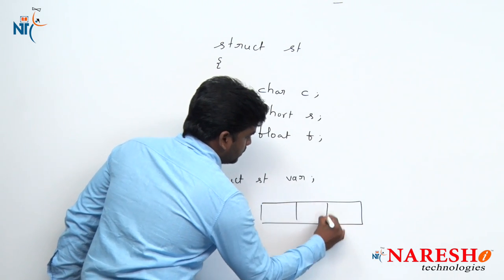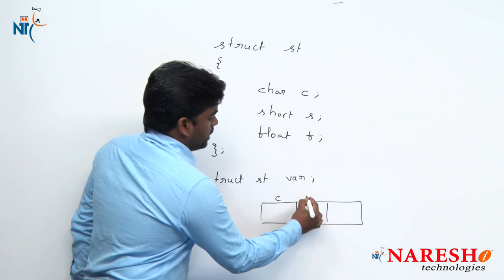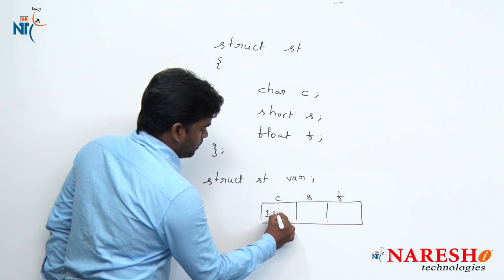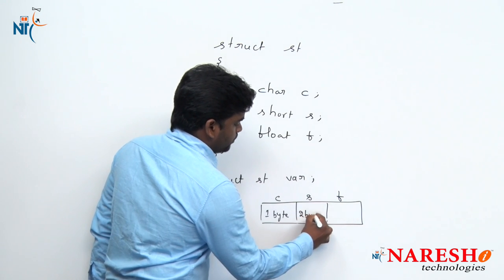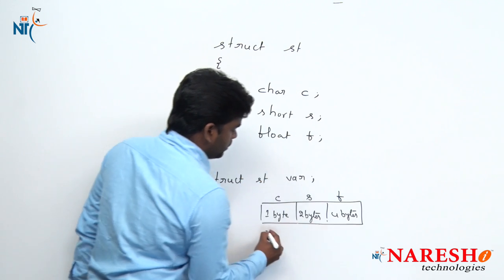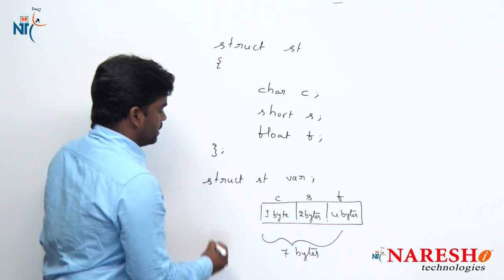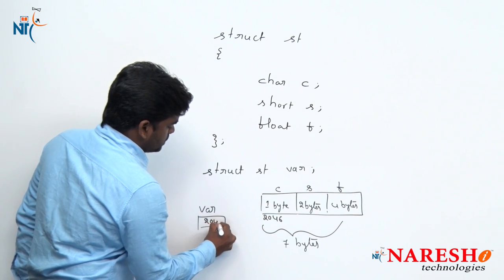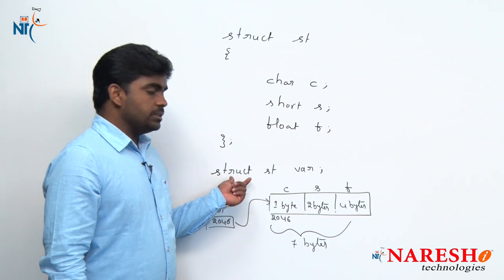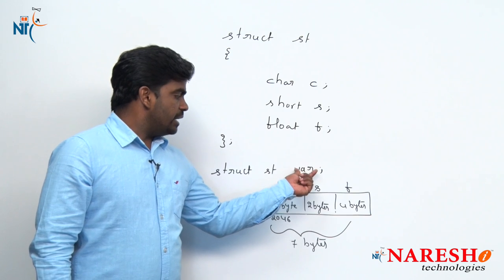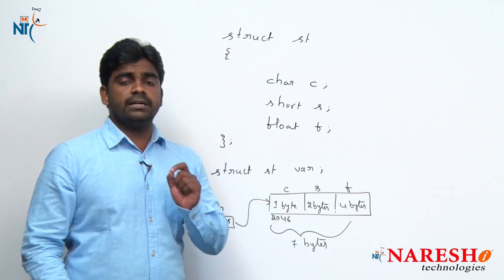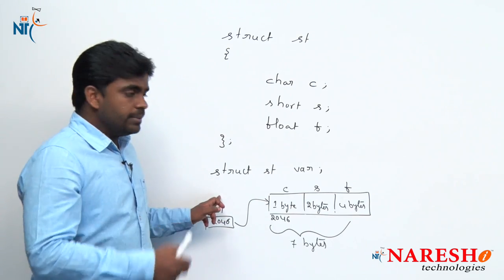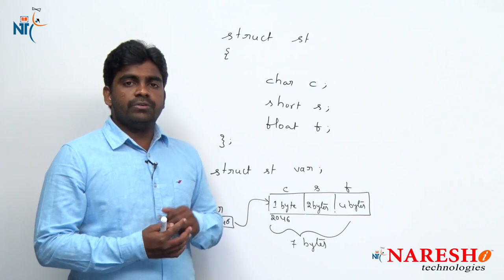Three blocks of memory will be allocated: one for 'c', one for 's', and one for 'f'. The size of 'c' is one byte. Size of short occupies two bytes. Size of float occupies four bytes. Total seven bytes of memory will be allocated to this variable 'var'. The variable holds the base address — consider 2046. How can we access the values of these structure elements? Simply var.c, var.s, var.f using the dot operator. We can also call it the accessor in structures. With the help of that accessor, we can store all the elements into the structure at a time and we can access or process all the elements at a time.